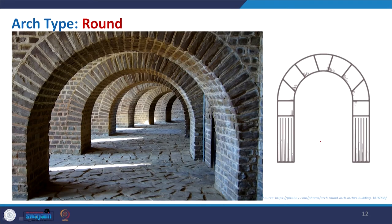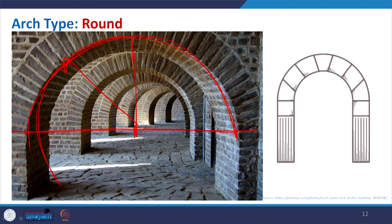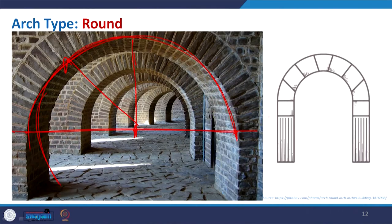Coming to the round arch, its form gives the completeness of a circle. It is basically a semicircular shape where the center is fixed at the bisection of the horizontal line and a radius is rotated to give a round form. This gives good symmetry — as we discussed, the India Gate uses this kind of round arch. The masonry layout also maintains symmetry, with the center defined and the rise giving the round form.